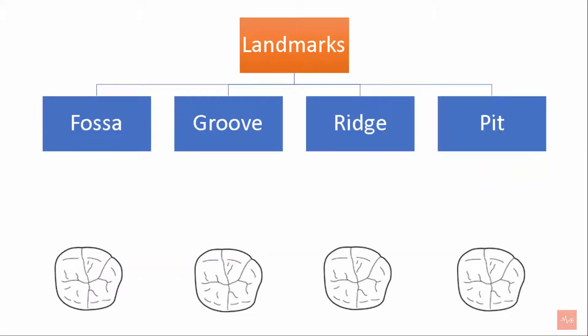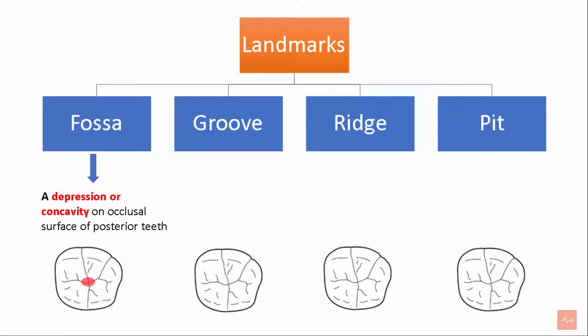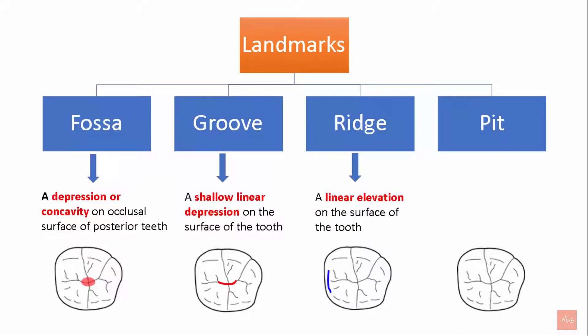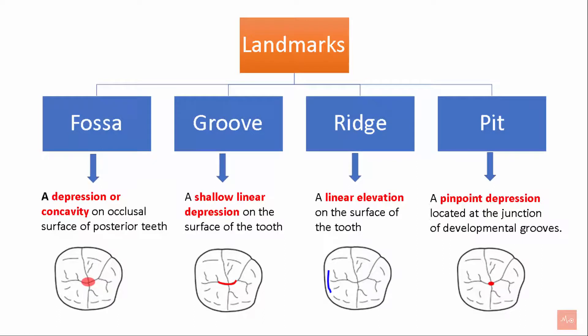Let's see the landmarks. We have seen the cusps; now let's see fossa, groove, ridge, and pit. A depression or concavity on the occlusal surface of posterior teeth is called a fossa. A shallow linear depression on the surface of the tooth is called a groove. A linear elevation on the surface of the tooth is called a ridge. A pinpoint depression located at the junction of developmental grooves is known as a pit.